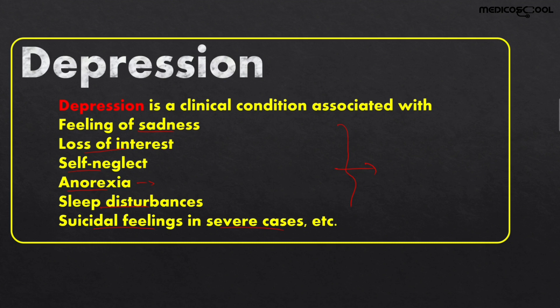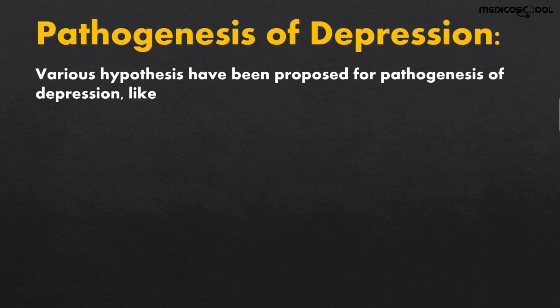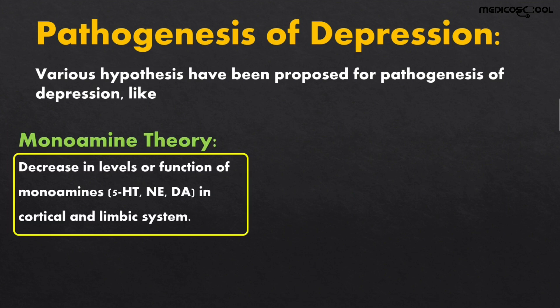What is the pathogenesis behind depression? There are many theories, but two important ones are the monoamine theory and the neurotropic theory. The monoamine theory states that it is the decrease in the levels and function of monoamines like serotonin, norepinephrine, and dopamine in the cortical and limbic systems which are responsible for the pathogenesis of depression.